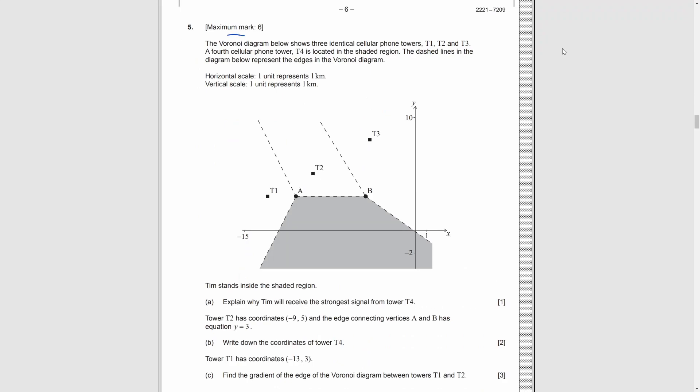Question 5. A Voronoi diagram is shown. T1, T2, T3 are three towers. And T4, the fourth tower, is located somewhere in the shaded region. Dash line represents the edge. Now, Tim stands inside the shaded region. And for part A, we need to explain why Tim will receive the strongest signal from T4. Very easy. Since inside the shaded region, all the points are closest to T4, instead of the other towers.